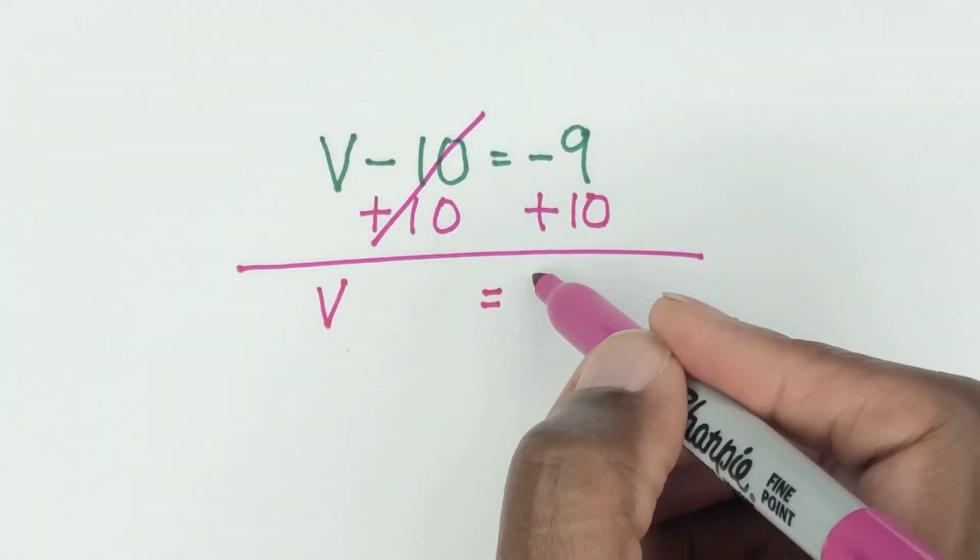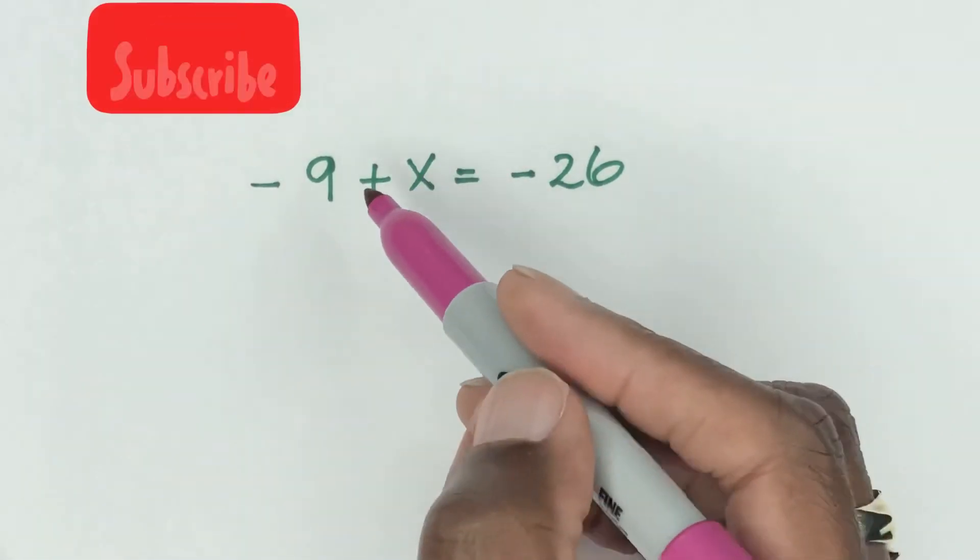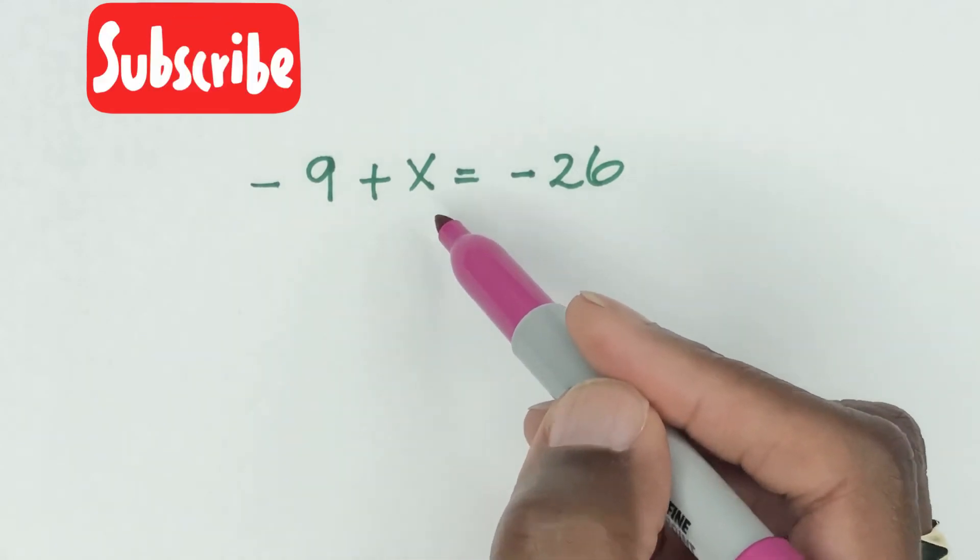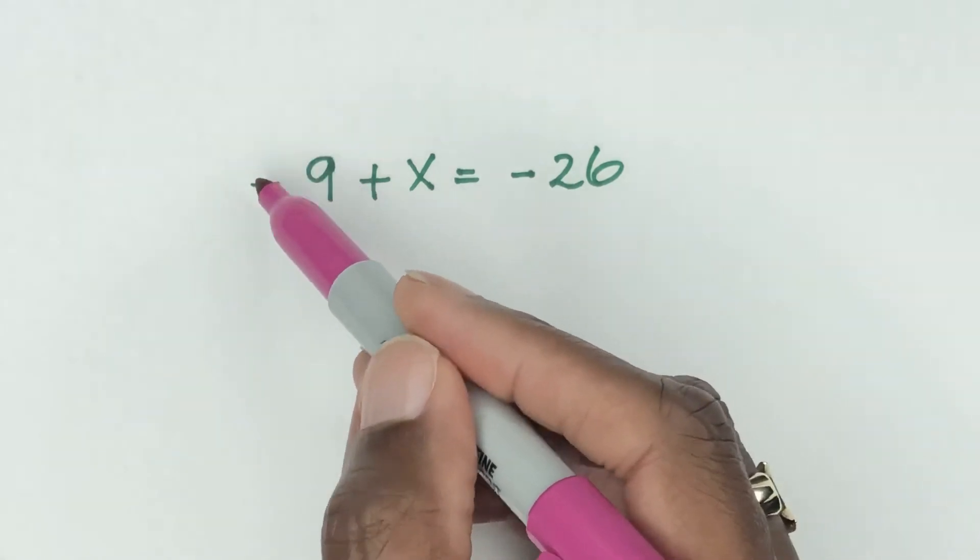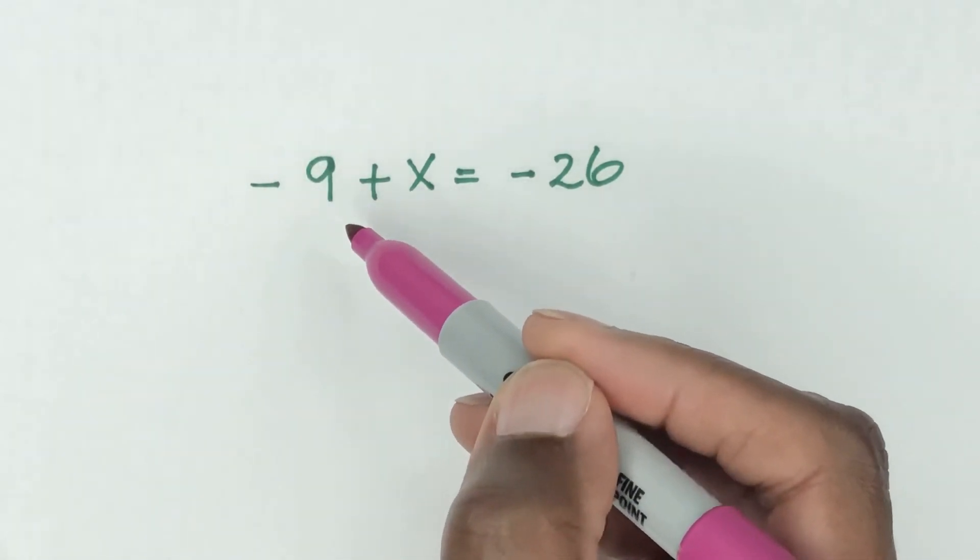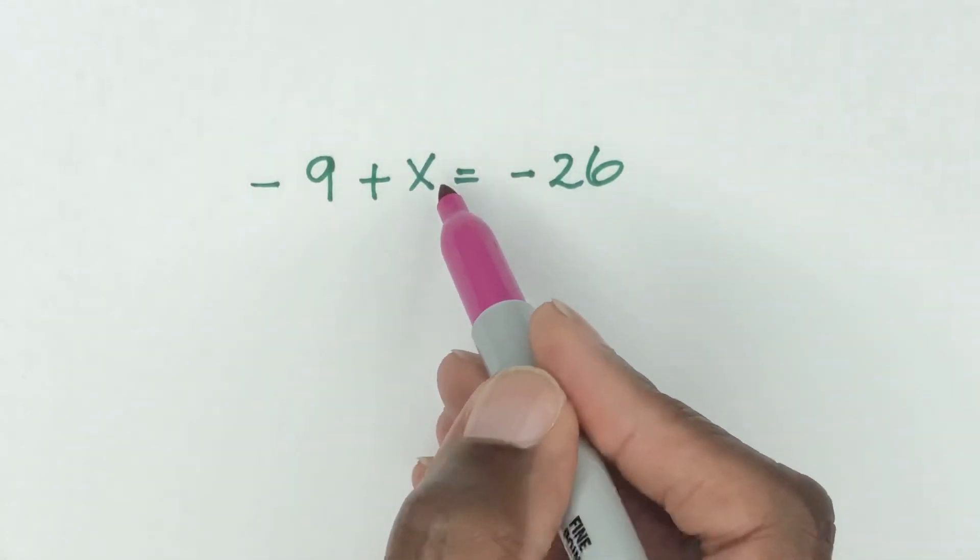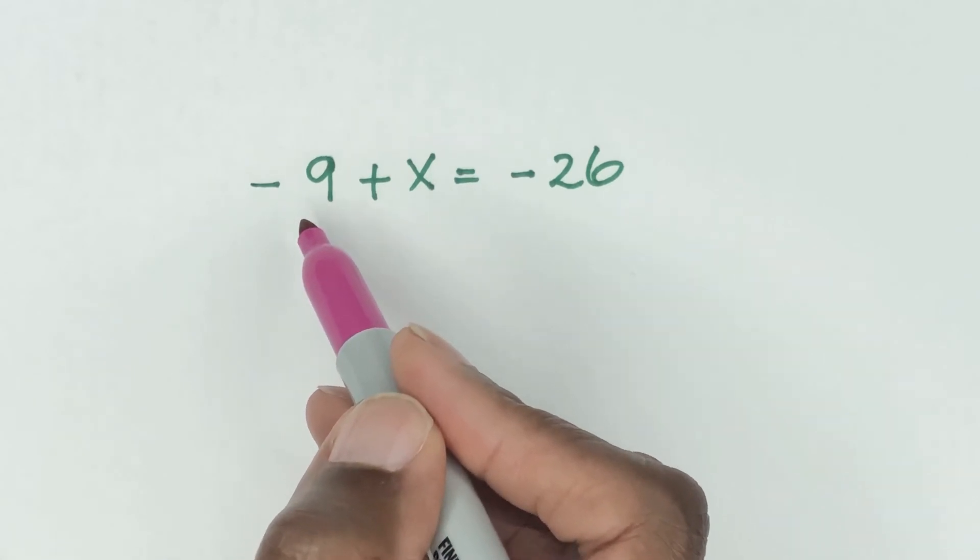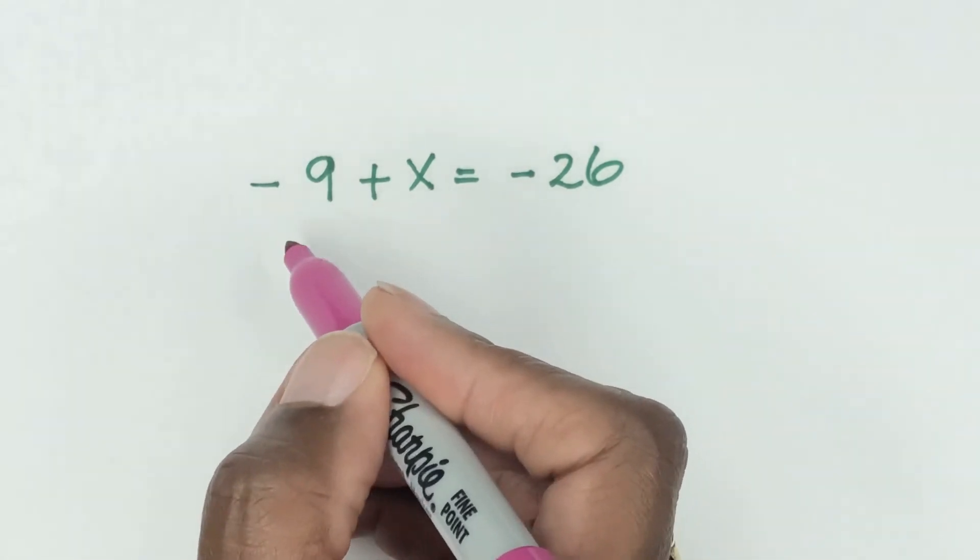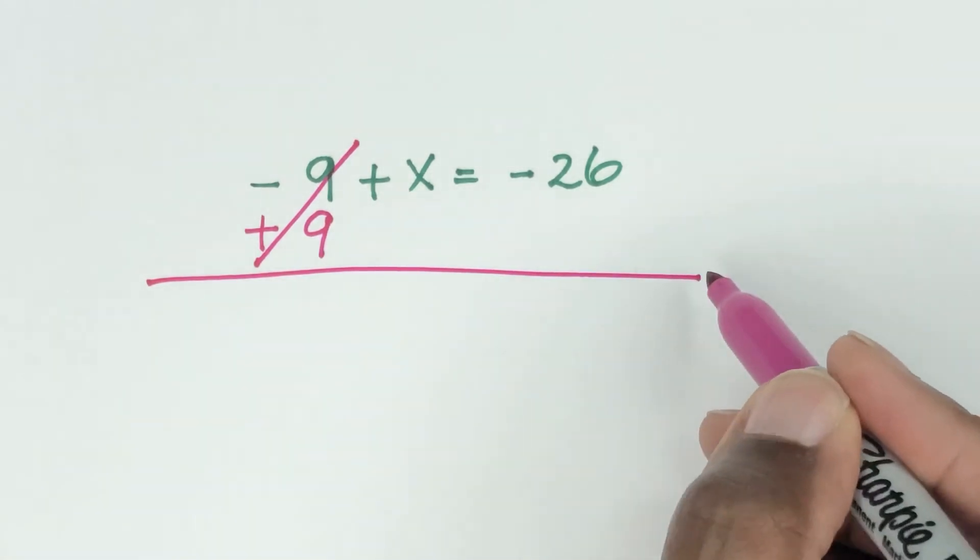This next equation reads minus 9 plus X equals minus 26. Just because it is the other way around, the last question the variable was on this side, the rule is still the same. It doesn't change. What's your objective? Your objective is to get the variable on its own. So to do that we have to get rid of the minus 9 by doing the opposite operation. The opposite of minus 9 will be plus 9. So now that's gone, draw your little line here.